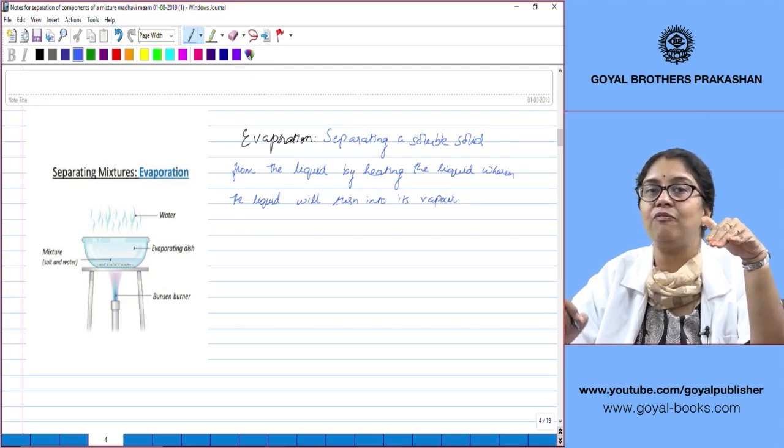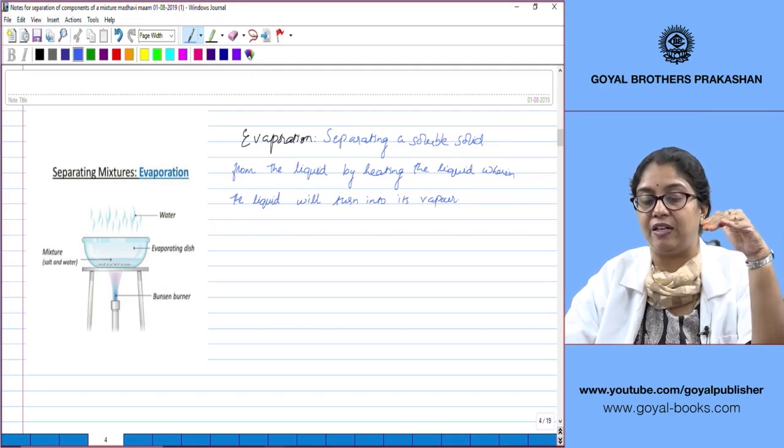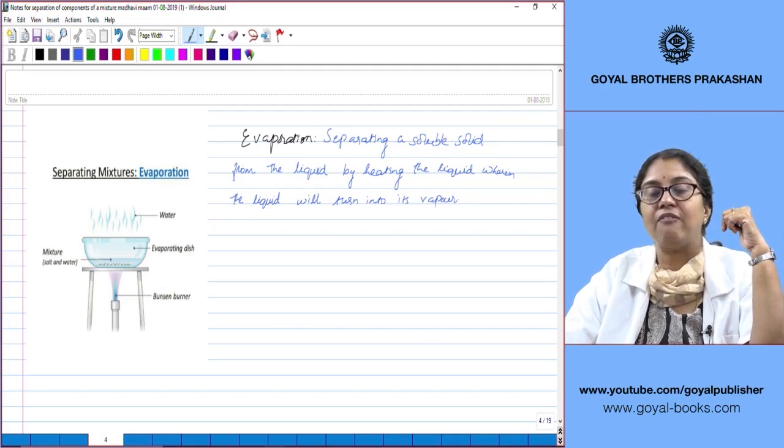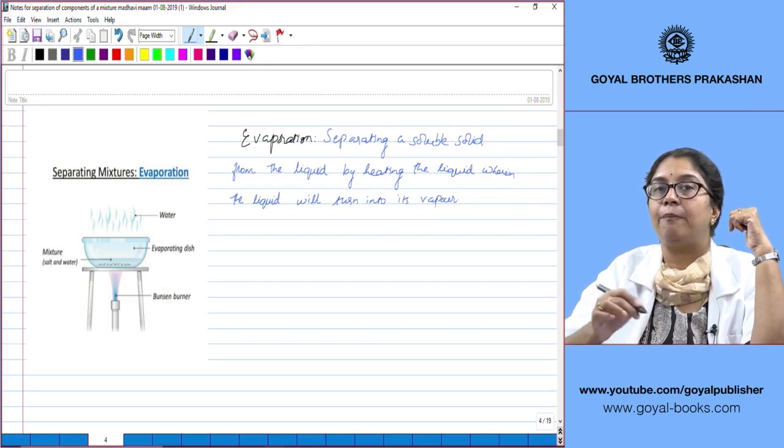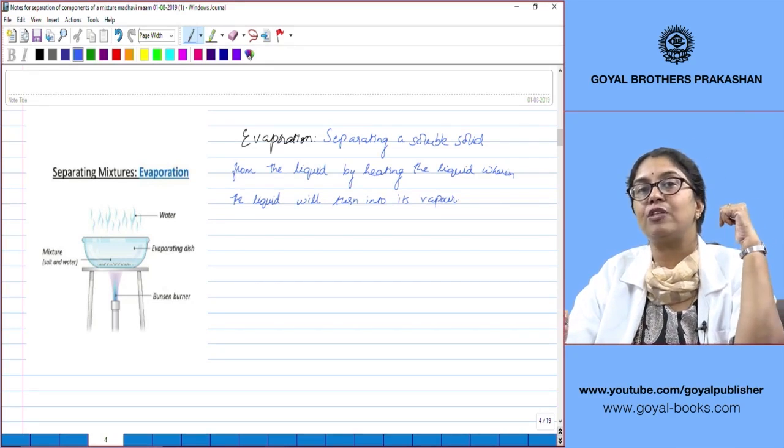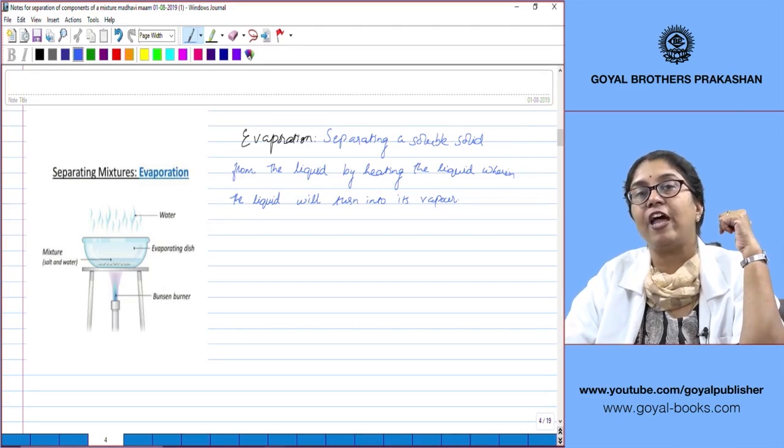In evaporation we don't boil the liquid but we evaporate the liquid. Basically evaporation is used to separate soluble solids from their liquids.